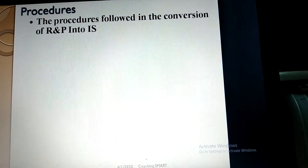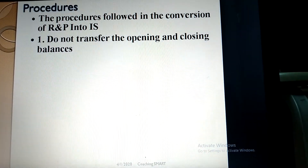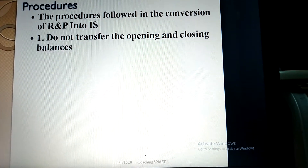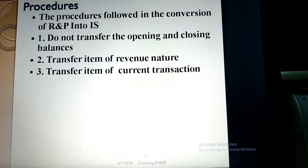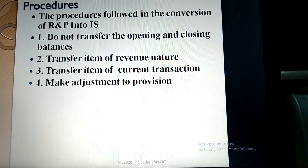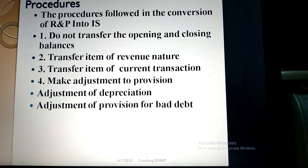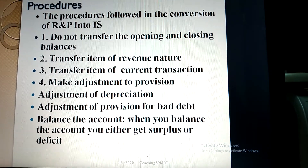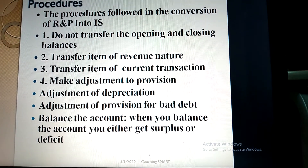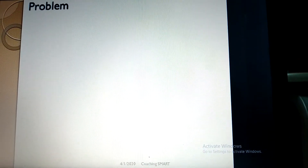Procedures followed in the conversion of receipts and payment account into income and expenditure account: one, do not transfer the opening and closing balance of the receipts and payment account; two, transfer items of revenue nature; three, transfer items of current transactions; four, make adjustments for provisions — adjustment of provision for depreciation and adjustment of provision for bad debts. Then balance the account: you either get a surplus, meaning income is more than expenditure, or a deficit, meaning expenditure is more than income.